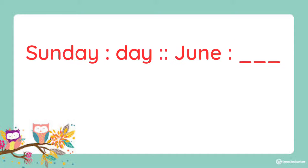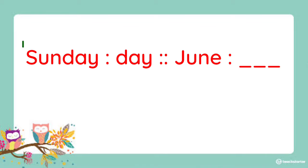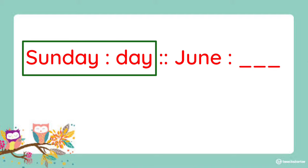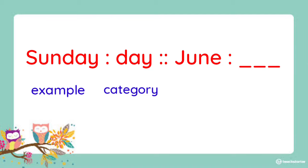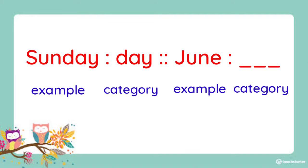Next. Sunday is to day as June is to blank. Again, first, let us examine the first pair of words — Sunday and day. We can say that Sunday is an example of day. So the relationship is example to category. This means that we have to think of a category for June to know the missing word. What do you think is the answer? It is month. June is an example of month.